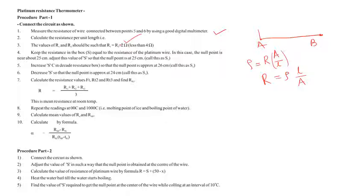Keep the resistance box S equal to the resistance of the platinum wire; in this case the null point is near about 25 cm. In the decade counter, we can change resistances by small amounts like 1 ohm, 0.1 ohm, or 0.01 ohm. Then increase S in the decade resistance box to get the null point around 25–26 cm, and decrease S so that the null point is approximately at 24 cm. These changes allow us to calculate the mean resistance.